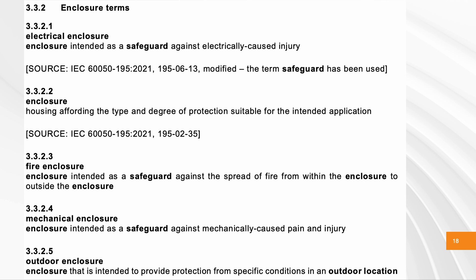One safeguard can be used against several kinds of energy. For example, an enclosure — think of the housing or casing of a product. It might serve as an electrical safeguard against electrical shock. It can also function as a fire enclosure to contain fire inside the product and prevent it from spreading outside. It can also act as a mechanical safeguard — for example, to make sure rotating parts don't catch someone's hair or clothing.